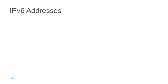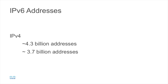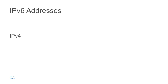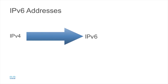IP version 4 has a very limited lifespan. It has about 4.3 billion addresses within that address space. Now that might seem like a lot, but when you look at all of the address space that's not usable, there's about 3.7 billion addresses that are usable — a significant number are not able to be assigned to end devices. With the rapid growth of the internet, IP version 4 has been grown out of.